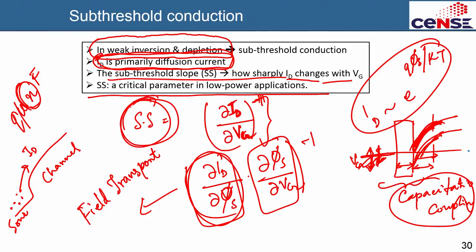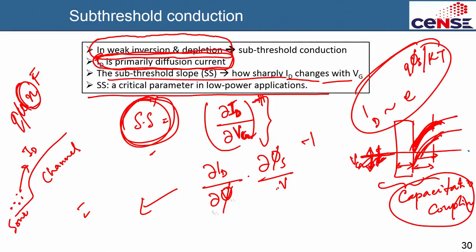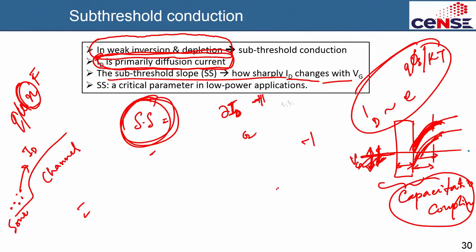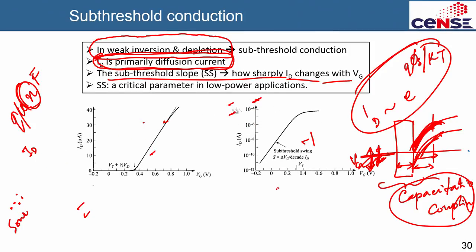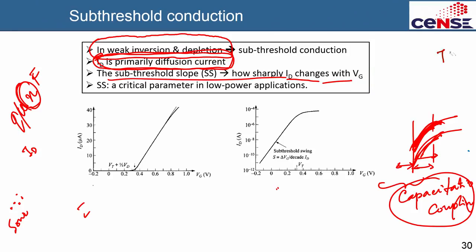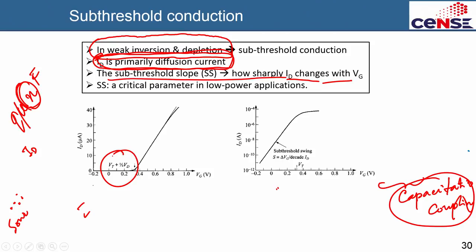We are not deriving the full expression here; I will show you the eventual result. Let me show you some printed figures from the SMZ textbook, which I will put on the reading list. On a linear scale, below threshold the current is almost zero, but on a log scale you can see the current rises by many orders of magnitude.